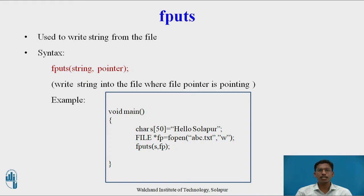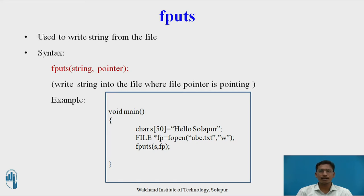The next function is fputs. 'f' stands for file, 'put' for writing, 's' for string. This function is used to write one string into the file. Syntax: fputs(string, file_pointer) — it writes the string into the file where the file pointer is pointing. Example: to write "hello solapur" into abc.txt, fputs(s, fp) writes string s which contains "hello solapur" into abc.txt at the file pointer position.